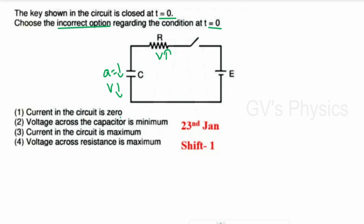Evaluating the options: Option 1 says current in the circuit is zero — this is incorrect, as maximum current flows at t = 0. Option 2 says voltage across capacitor is minimum — correct. Option 3 says current is maximum — correct. Option 4 says voltage across resistance is maximum — correct. The incorrect statement is option 1.